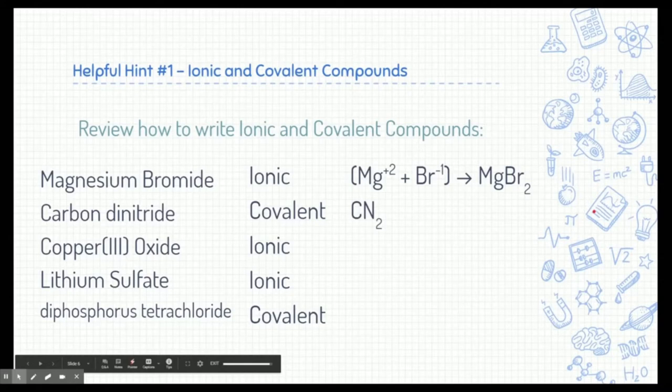All right, copper three oxide is an ionic compound. Copper three, copper is a transition metal, and notice the Roman numeral three next to it? That lets us know that the copper's charge is a plus three. Oxygen's charge is a minus two based on its position on the periodic table. Therefore, to put them together, we need two coppers and three oxygens, so they cancel each other out. So copper three oxide's formula is Cu2O3.